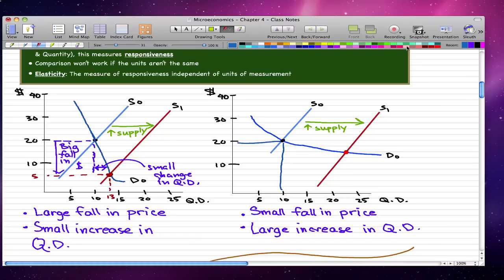You can see in this graph I'm doing the same thing. This is our original price and our original quantity demanded right here. When the supply increases, this is the new price of the product and the new quantity demanded. You can see the opposite happened here.